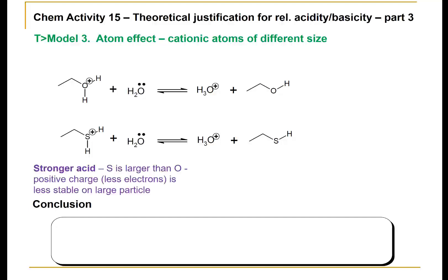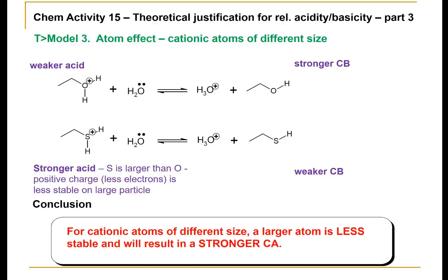Therefore, we conclude that the protonated thiol is the stronger acid. S is larger than oxygen, so the positive charge is therefore less stable — we have fewer electrons on that larger particle. Correspondingly, the protonated alcohol would be the weaker acid, as that positive charge is not quite as unstable. We would expect the alcohol to be the stronger conjugate base, and the thiol to be the weaker conjugate base. For cationic atoms of different size, the larger atom is less stable, which results in a stronger conjugate acid.